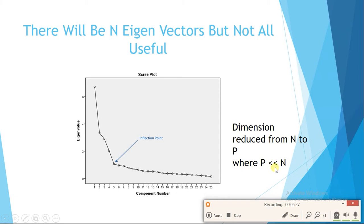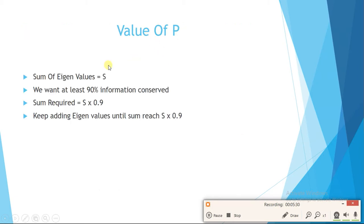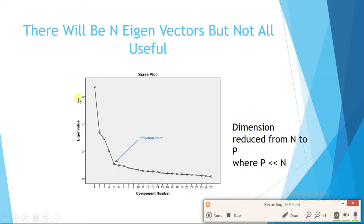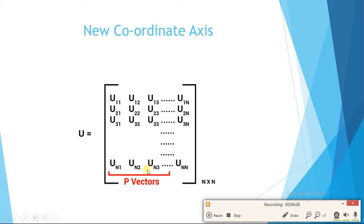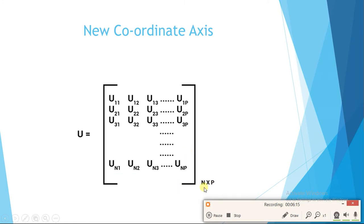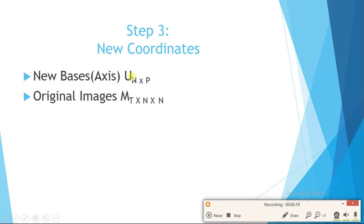We choose only the few eigenvectors corresponding to the first few eigenvalues, reducing dimension from n to p where p is less than n. To find p, we compute the sum of all eigenvalues representing total variation, and we want at least 90% of information conserved. We set a threshold sum of S×0.9 and keep adding eigenvalues from the start until we reach that sum. Those first p eigenvectors become the new coordinate axes.